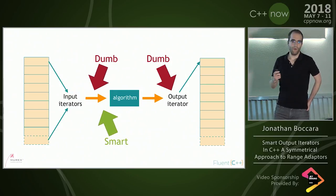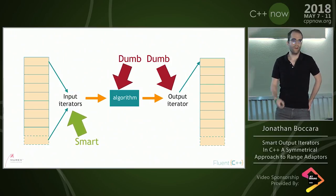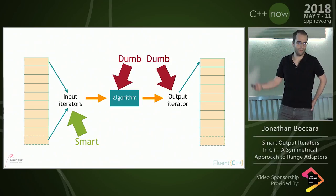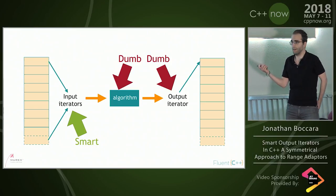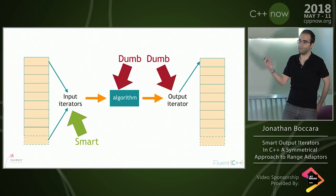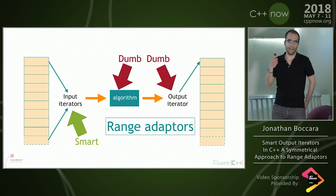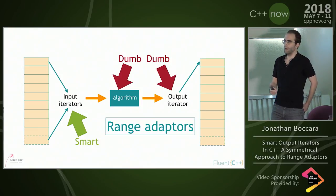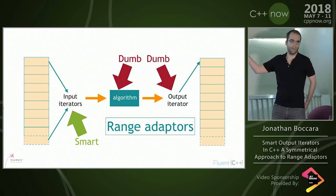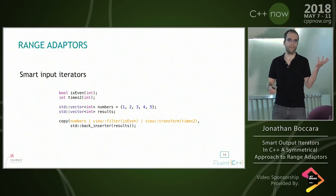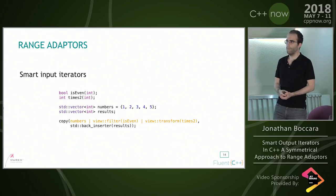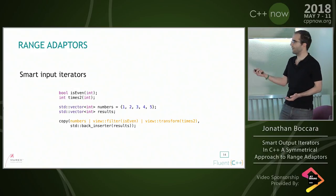Now, what if the logic was somewhere else? What if it was in the input side, in the iterator? That's how range adapters operate. By ranges, I'm talking about ranges libraries such as range-v3, for example. That looks like this.